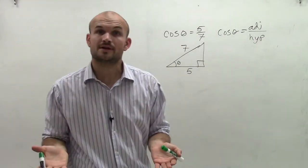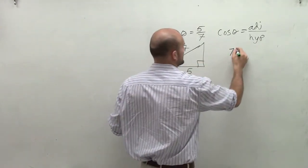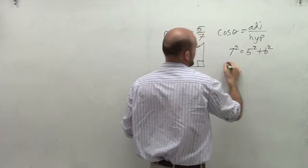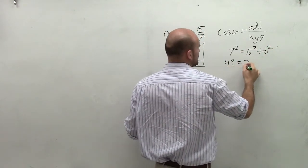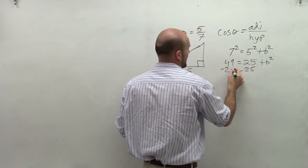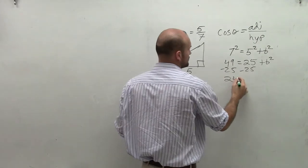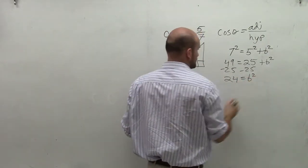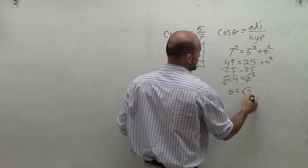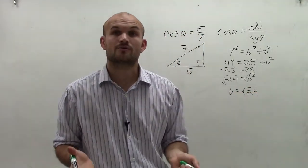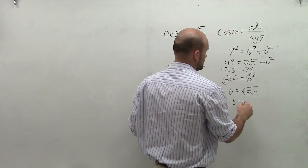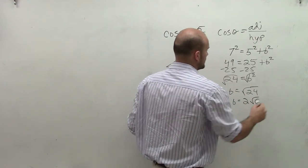So now what I need to do is I need to use Pythagorean Theorem to help me get this other side. So I'll quickly write 7 squared equals 5 squared plus b squared. So 49 equals 25 plus b squared minus 25 equals 24 equals b squared. Take the square root. So I have b equals the square root of 24. Now, we always want to see if we can reduce that at all, and I can break that down into b equals 2 square root of 6.